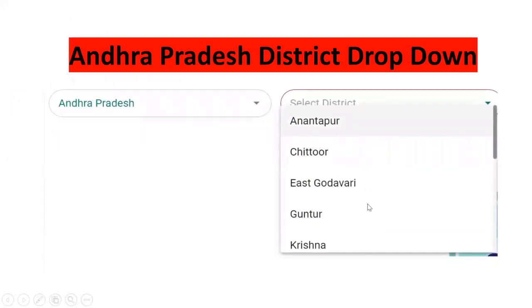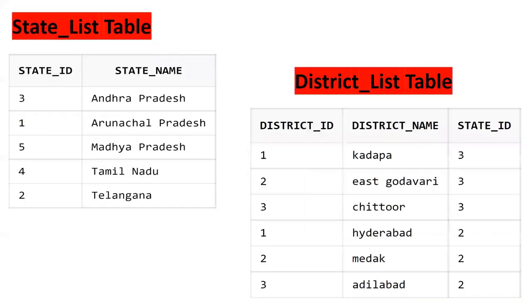Now after selecting a particular state, I want to display only the districts for that state. For example, if I select Andhra Pradesh, only Andhra Pradesh districts should be populated. So the second requirement is: based on the particular state selected, display the corresponding districts.